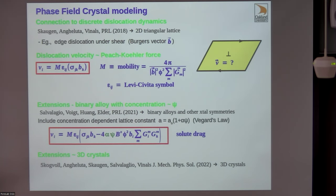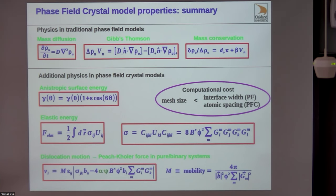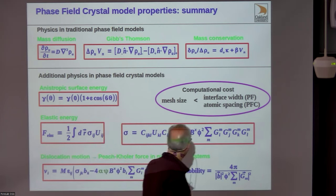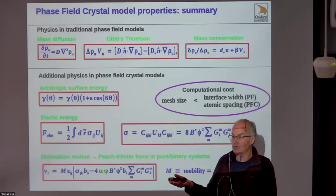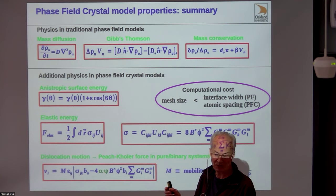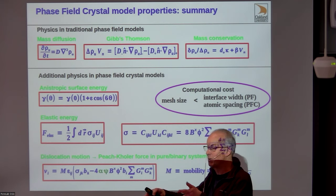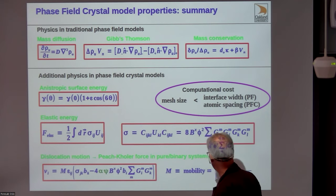Traditional phase field models give you sharp interface physics. The phase field crystal model gives all of that plus elasticity and the Peach-Koehler force. You do lose something though: there's a computational cost because your mesh size is limited by the size of an atom—maybe one-tenth of an atom—whereas in phase field modeling your grid spacing is limited only by the interface width. Although often those two quantities are not that different.